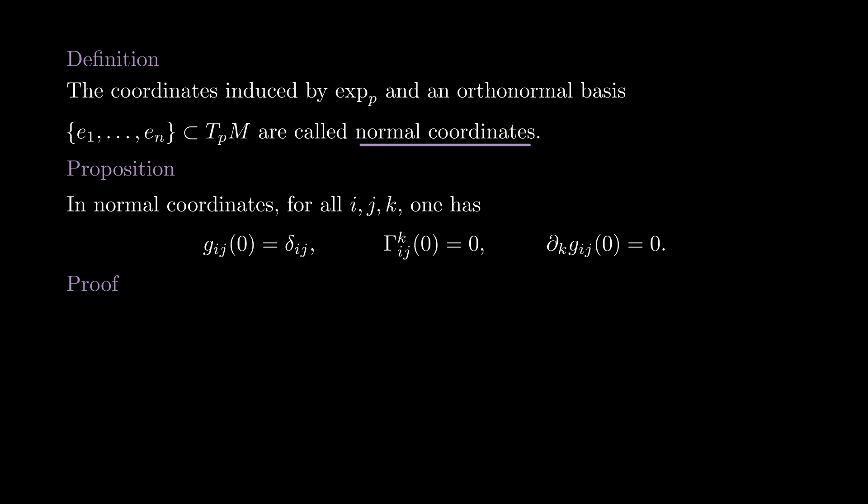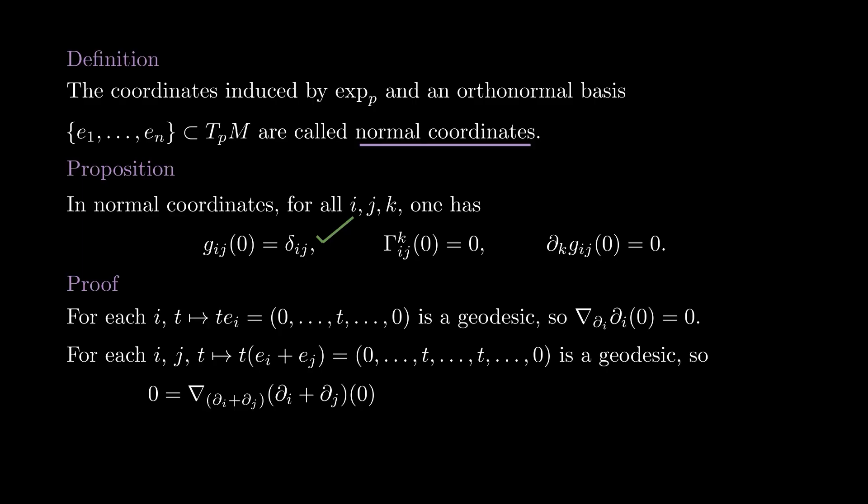The proof is quite simple. The first item just follows from the fact that we chose the bases to be orthonormal from the very beginning, so there is nothing to show. To get the second one, notice that the coordinate lines passing through the origin represent geodesics, so the covariant derivative nabla partial i partial i is zero along this line.